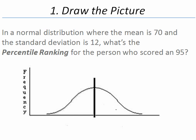For our particular question, we are asked: in a normal distribution where the mean is 70 and the standard deviation is 12, what is the percentile ranking for the person who scored a 95?